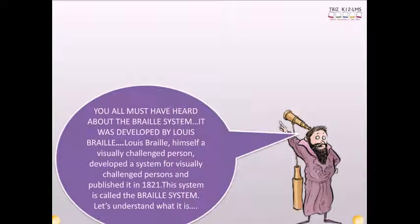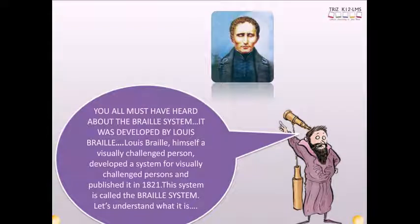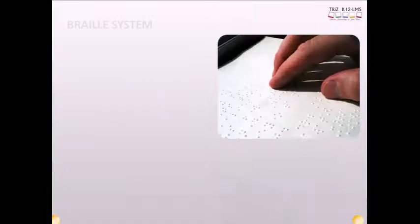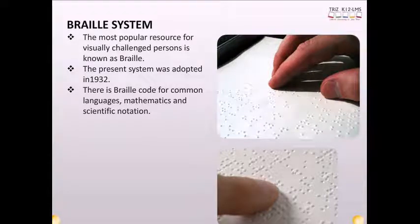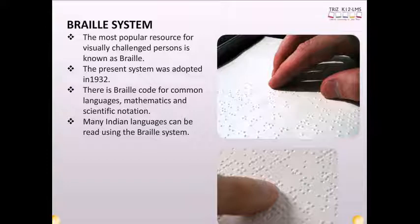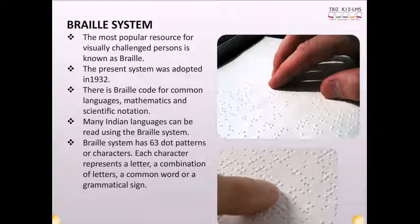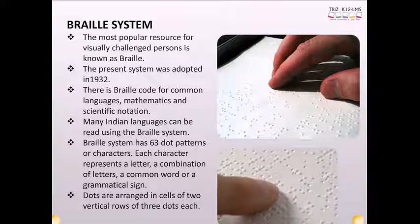You all must have heard about the Braille system. It was developed by Louis Braille, himself a visually challenged person, and published in 1821. The most popular resource for visually challenged persons is known as Braille. The present system was adopted in 1932. There is Braille code for common languages, mathematics, and scientific notation. Many Indian languages can be read using the Braille system. Braille system has 63 dot patterns or characters. Each character represents a letter, a combination of letters, a common word, or a grammatical sign. Dots are arranged in cells of two vertical rows of three dots each.